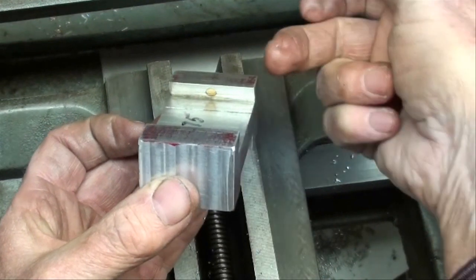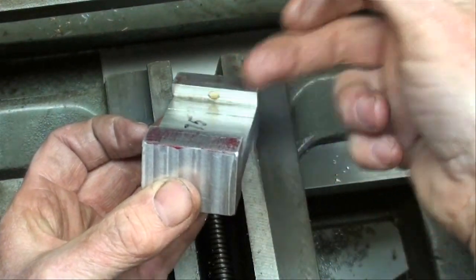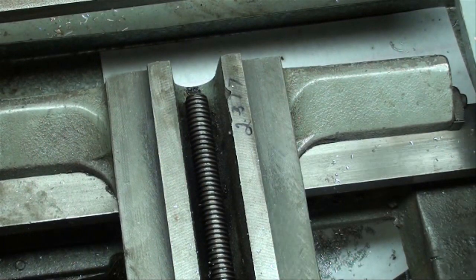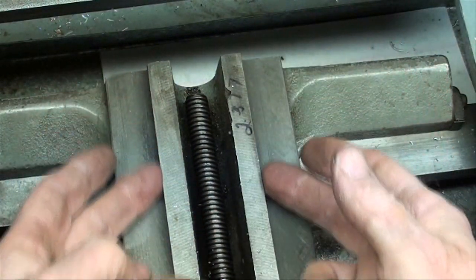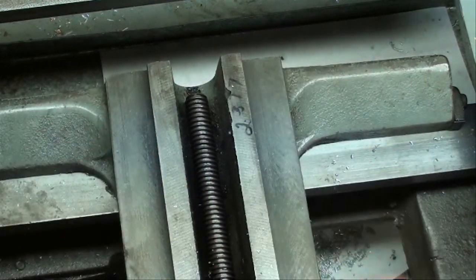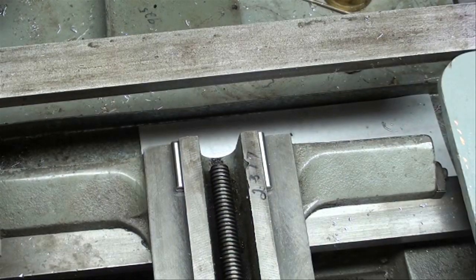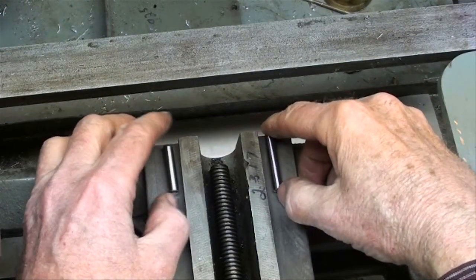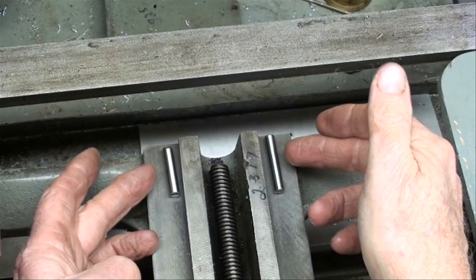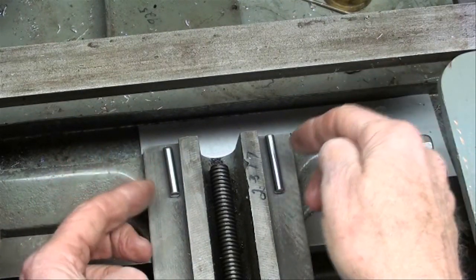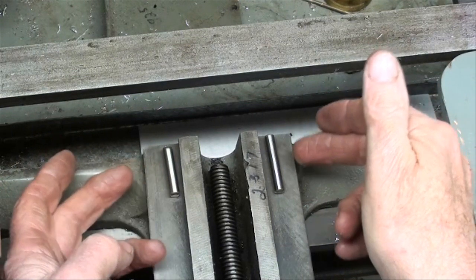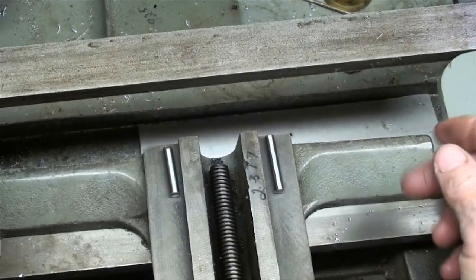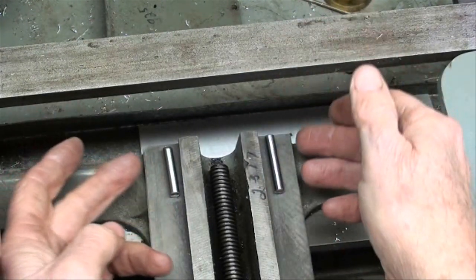Now let's measure this dovetail, the male. We're ready to measure the male dovetail. In order to do that, you need dowel pins or very accurate stock - it could be drill rod. I'm using quarter inch. It probably could be different sizes, that's not relevant because you're going to enter the dimension of these pins into the formula. Make sure everything is clean, no chips.